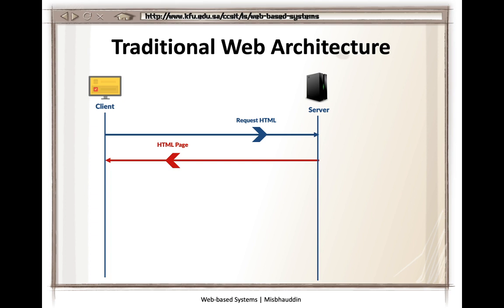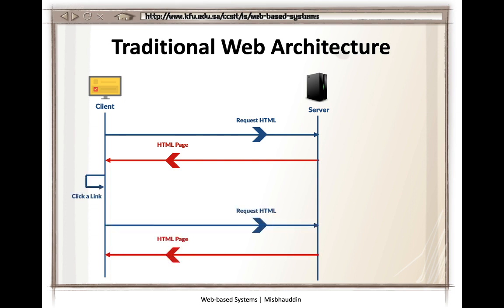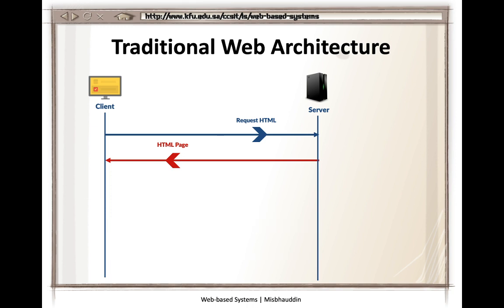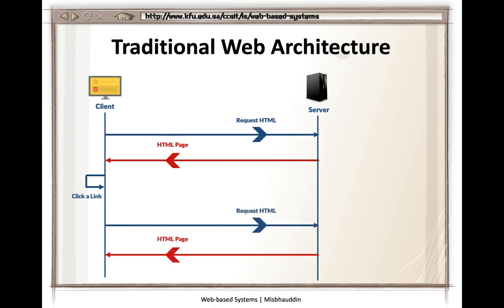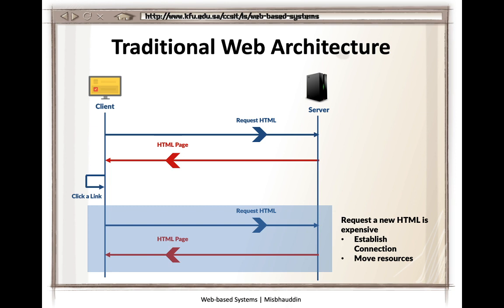While you are using the page, you find a link you're interested in and click on it. As soon as you click the link, the browser makes a new request to the server and that new page is sent back to the client. What happens is everything is requested again — a new connection is established and all the resources for that new page are transferred. This is how a traditional web page works.